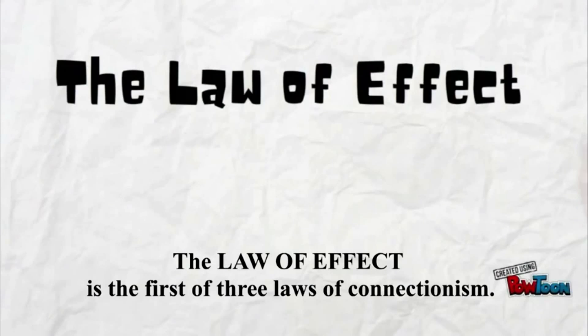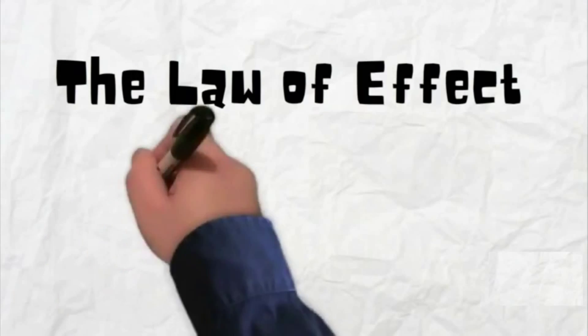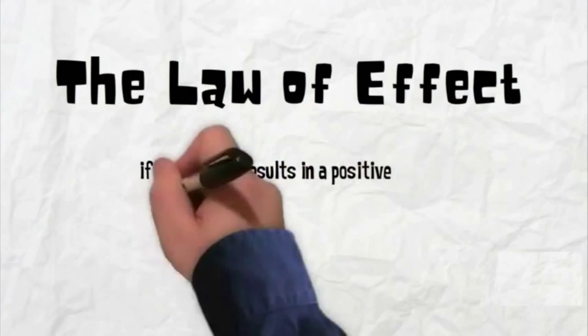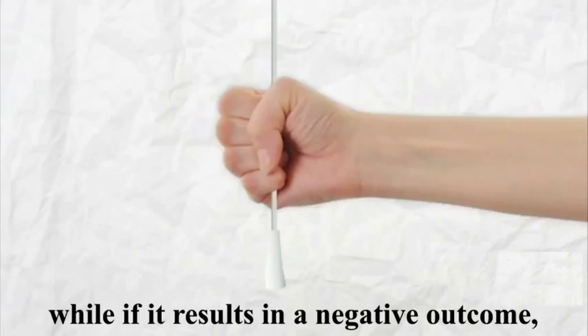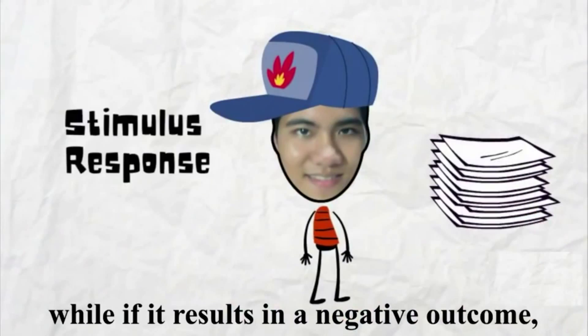The law of effect is the first of three laws of connectionism. It says that if a stimulus results in a positive outcome, it strengthens the SR bond. While if it results in a negative outcome, the SR bond is weakened.